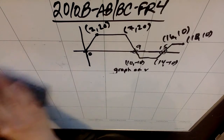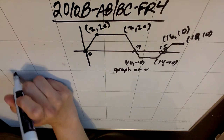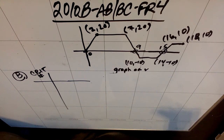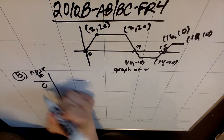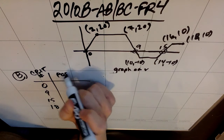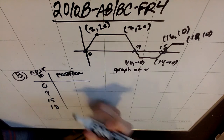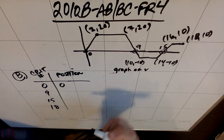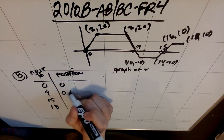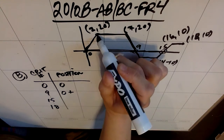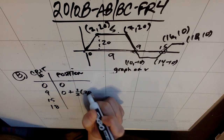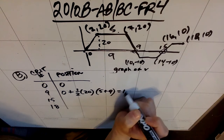So if I find the position of the squirrel at those four times, I can tell which is the biggest. At t equals 0, the squirrel's position is 0 because it's at building A. To find the position at t equals 9, I integrate under the curve. The squirrel's position at 9 is the starting position of 0 plus this trapezoid area, which has a height of 20, a base of 9, and a base of 5. So one-half times 20 times (9 plus 5) gives 140.